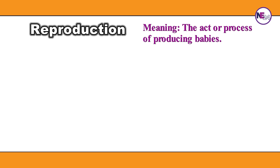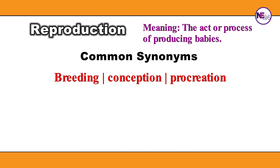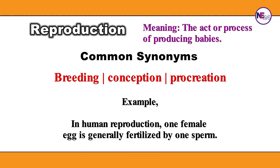Reproduction: the act or process of producing babies. Breeding, conception, procreation. In human reproduction, one female egg is generally fertilized by one sperm.